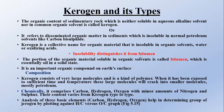Kerogen is organic material, but bitumen is soluble in organic solvents. The portion of organic material that is soluble in organic solvents is called bitumen — it is essentially oil in solid form. While kerogen is insoluble in organic solvents as well as in water, alkaline, or acidic substances. Kerogen is a very important organic compound.